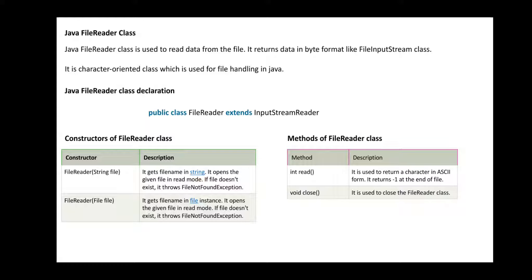Java FileReader class is used to read data from the file. When you define any information or a file with a FileReader class, that particular information will be read from the file itself. It returns data in byte format, like input stream classes — converting characters to 8 bits or 16 bits of bytes depending on how you want to access the information. It is a character-oriented class used for file handling in Java.